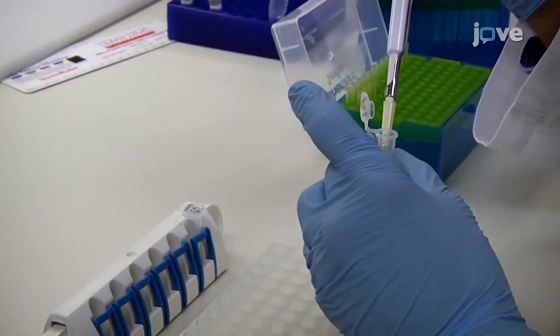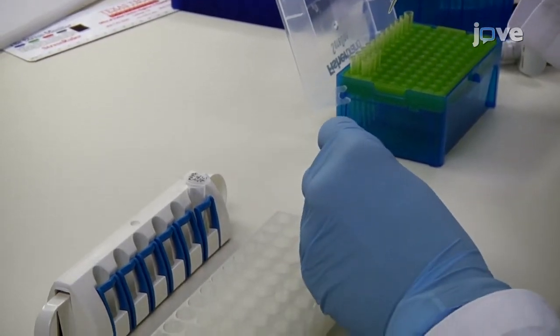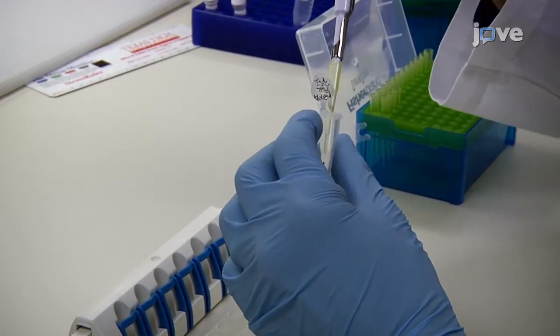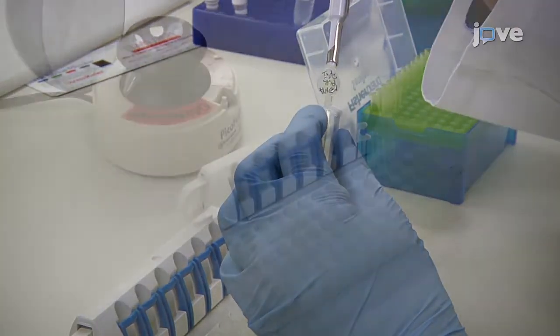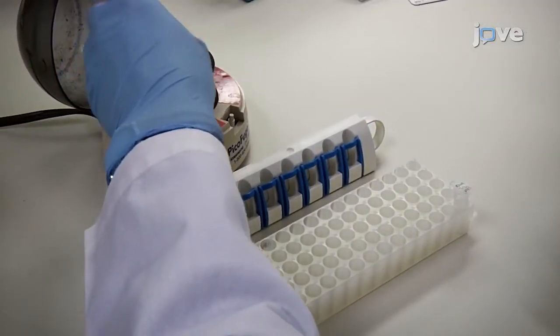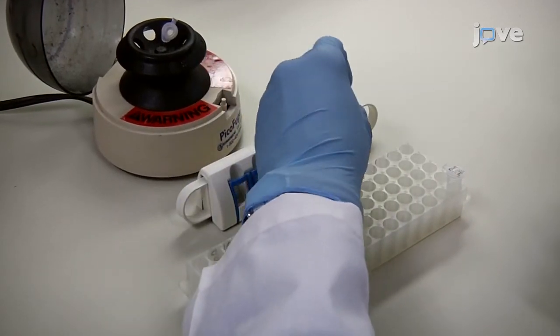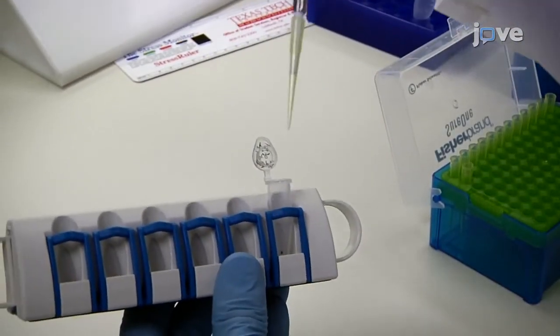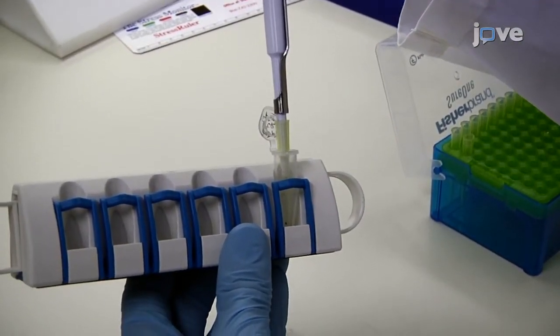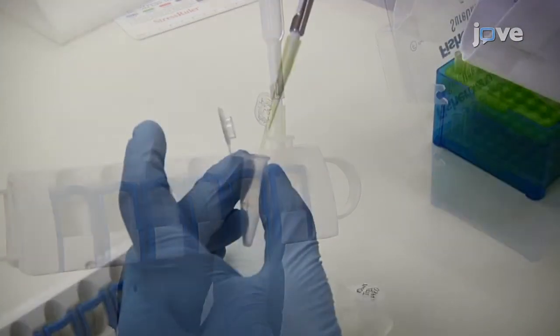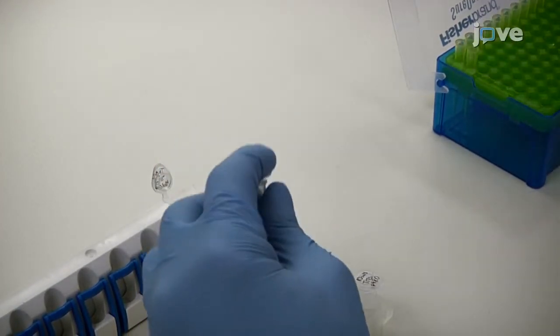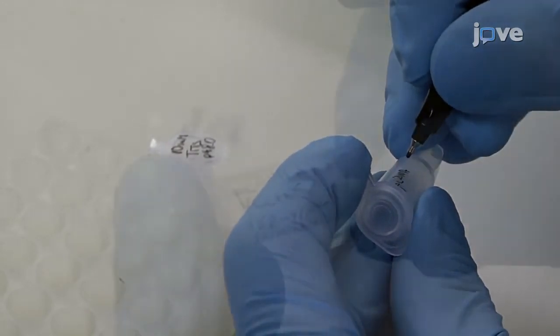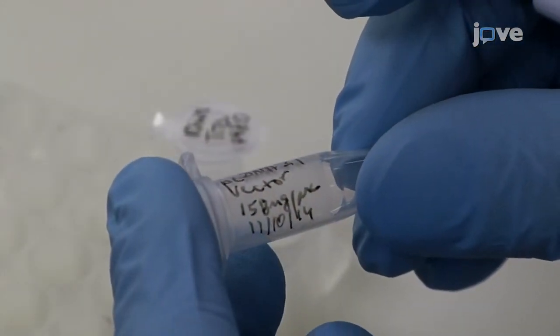Then, re-suspend the dried beads in 10 microliters of 10 millimolar tris hydrochloride pH 8.0. After 2 minutes, spin briefly, and then position the tubes on the magnetic collector for 2 minutes. Remove 8.5 to 10 microliters of the clear solution and place it in a new pre-labeled tube. Determine the concentration of the DNA fragments by UV spectroscopy.